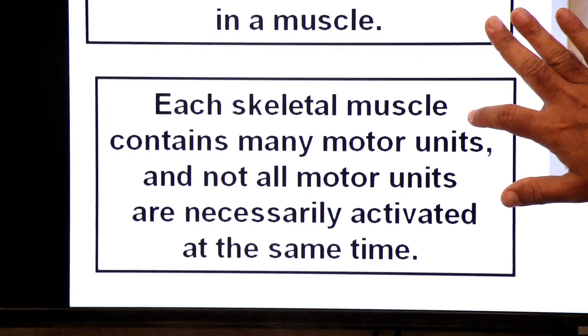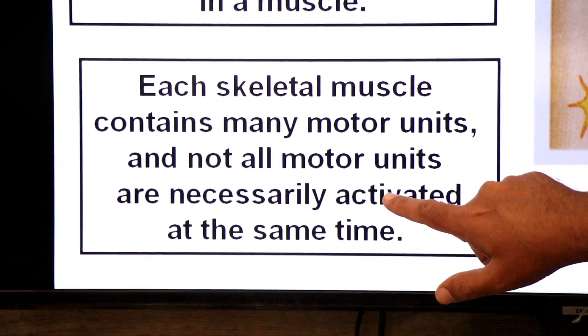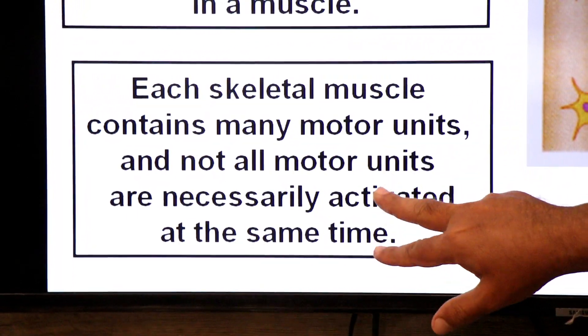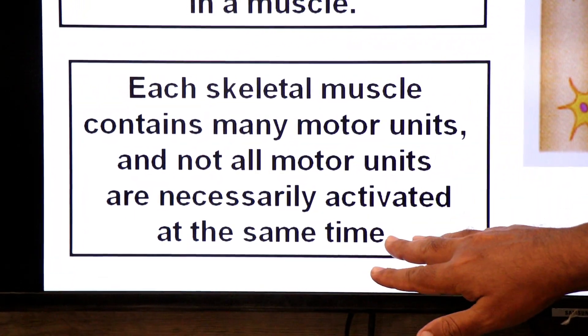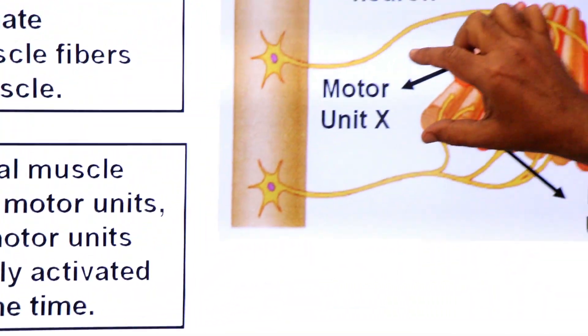Each skeletal muscle contains many motor units, and not all the motor units are necessarily activated at the same time. If motor unit X is activated, motor unit Y may be inactive. If Y is active, X may be inactive. This gives the muscle a graded response in contraction.